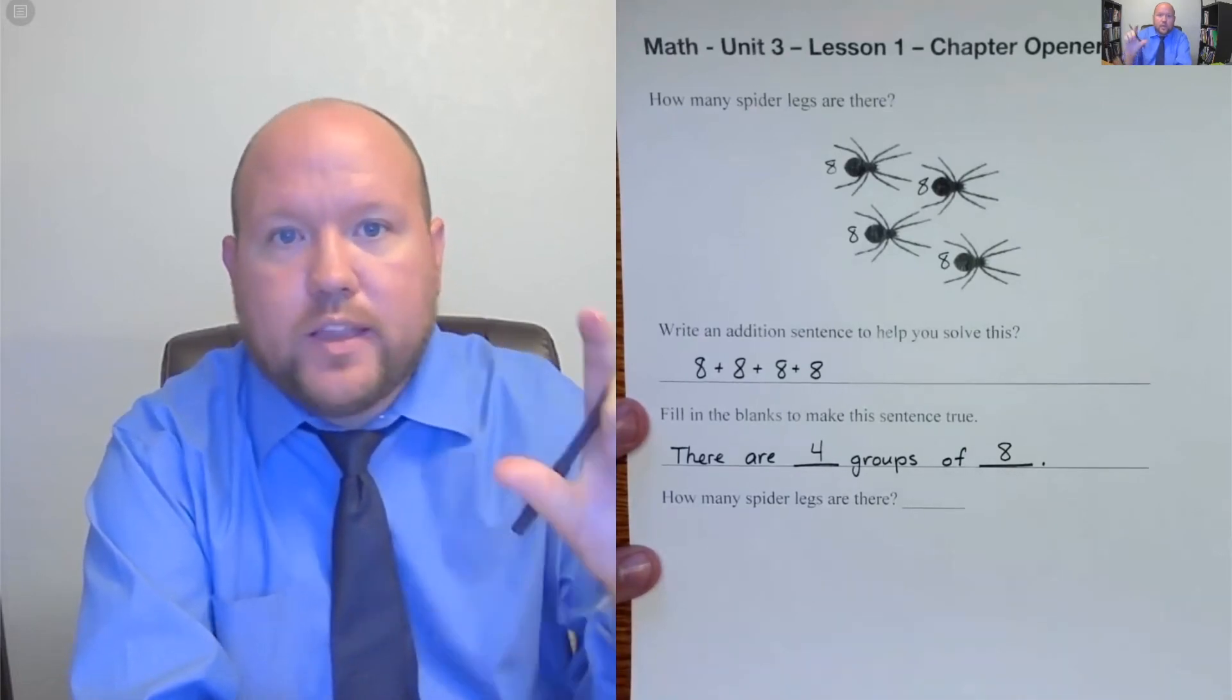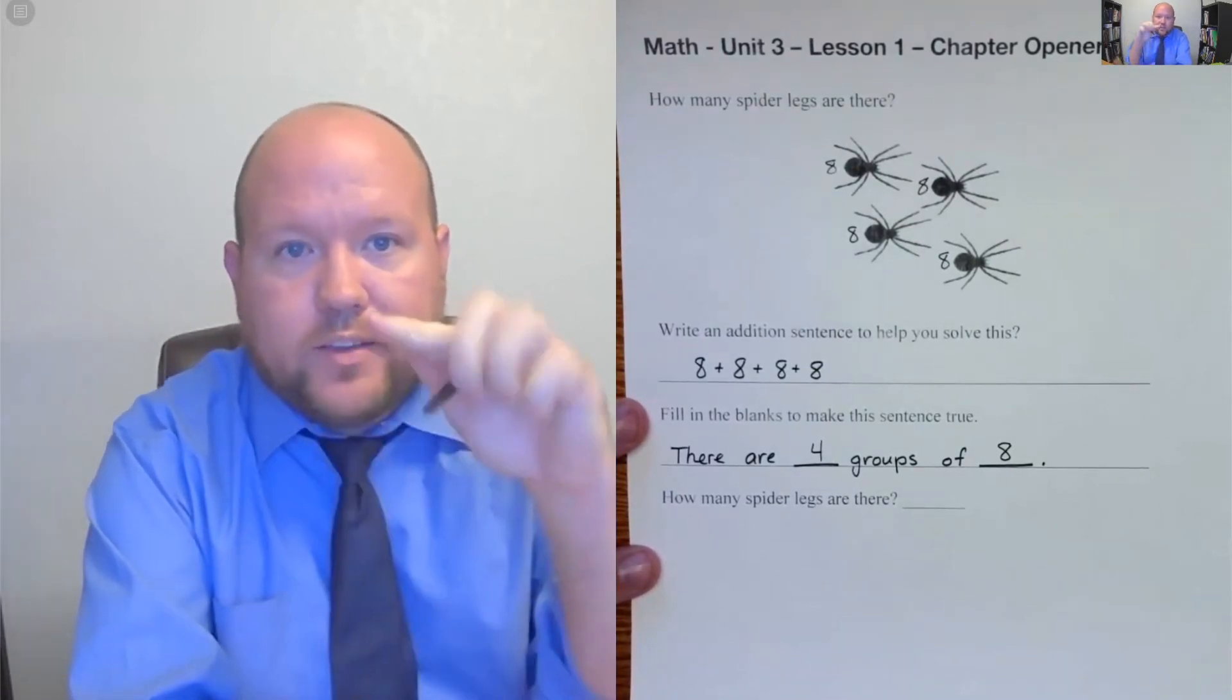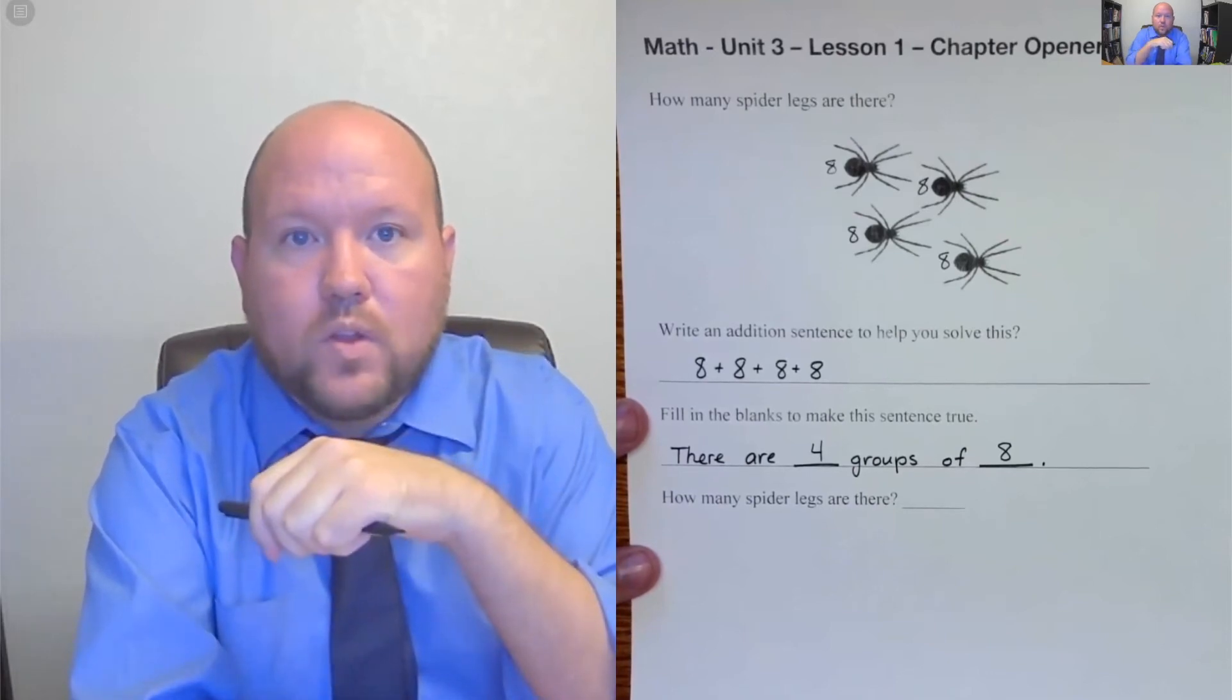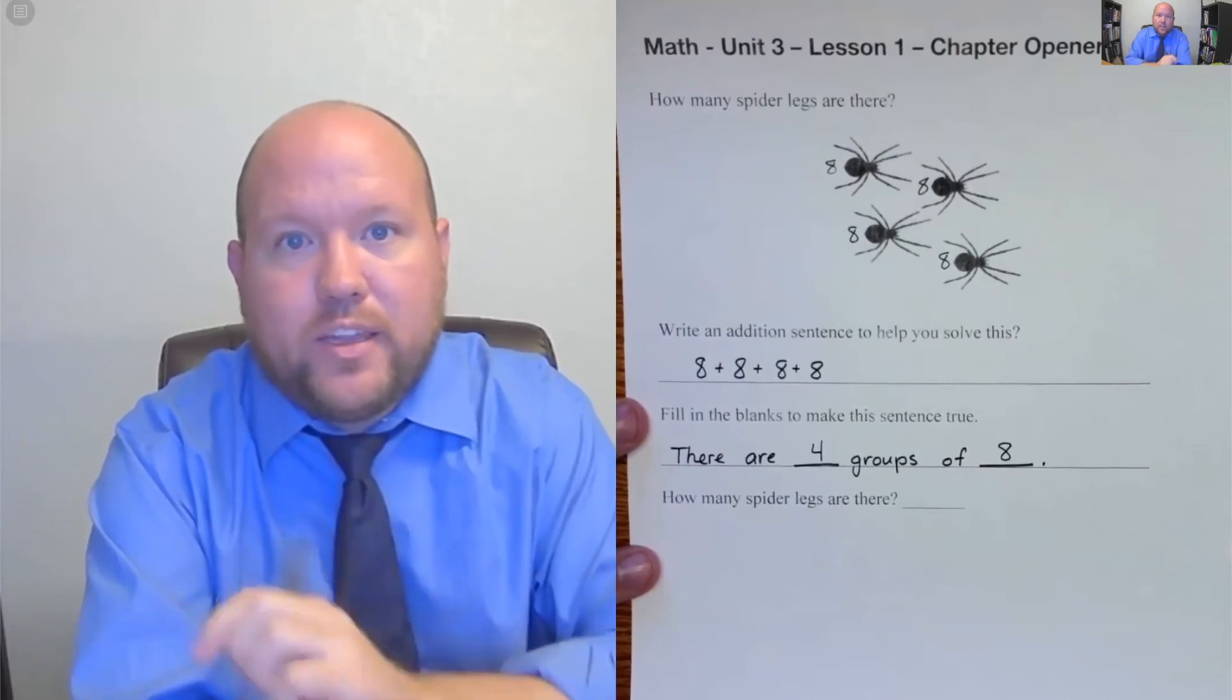Be careful that you don't get these two things switched around to think that there are eight groups of four. Eight groups of four would be like eight cats and you're counting the amount of legs.